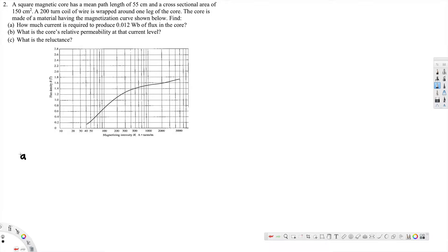Now let's see how to do that. First we have to find out the flux density. To find the flux density we use this formula: B is equal to phi divided by A.